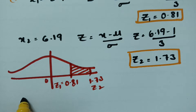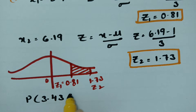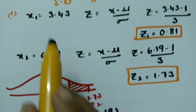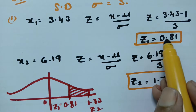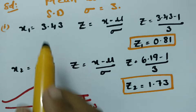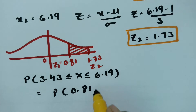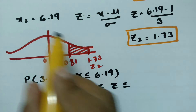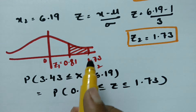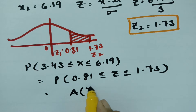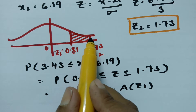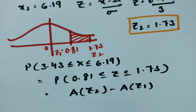The question asks for P(3.43 ≤ x ≤ 6.19). Converting to z-scores, this becomes P(0.81 ≤ z ≤ 1.73). The required area is the area of z2 minus the area of z1 — that is, area(1.73) minus area(0.81). The difference between these two gives the area for the problem.